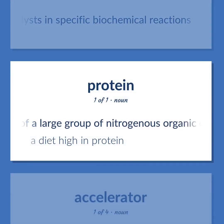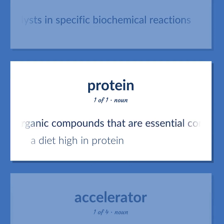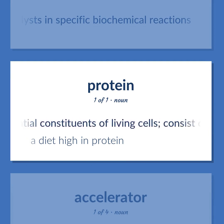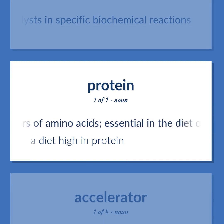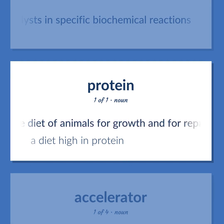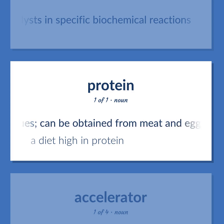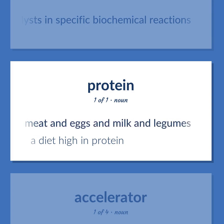Any of a large group of nitrogenous organic compounds that are essential constituents of living cells, consist of polymers of amino acids, essential in the diet of animals for growth and for repair of tissues, can be obtained from meat and eggs and milk and legumes. A diet high in protein.